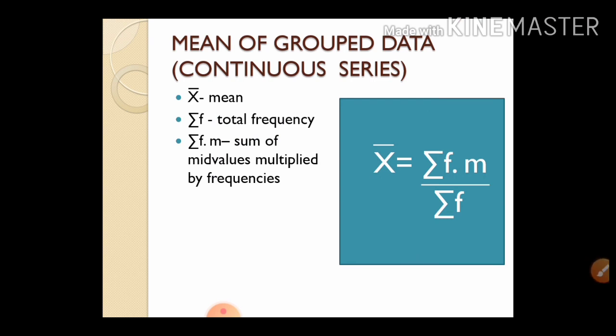For grouped data continuous series, the mean is calculated using the formula: sigma(f·m) / sigma(f), where sigma(f) is the total frequency (capital N), and m is the middle value of each class interval. Sigma(f·m) is the sum of middle values multiplied by frequencies. Let us see an example to make it clear.